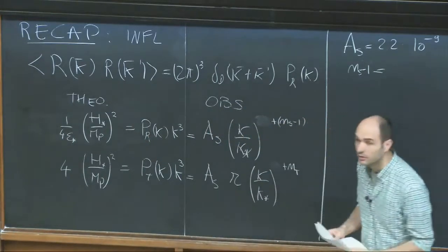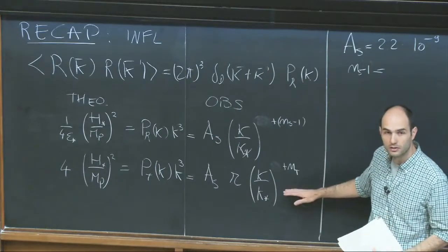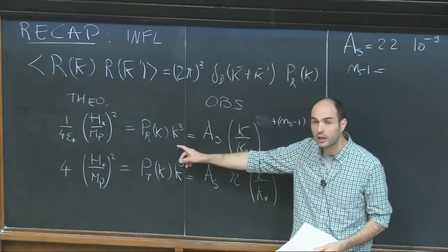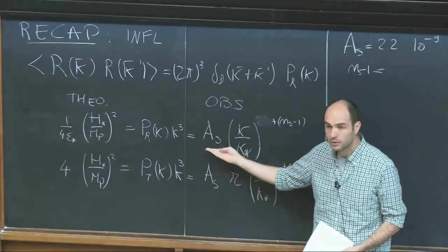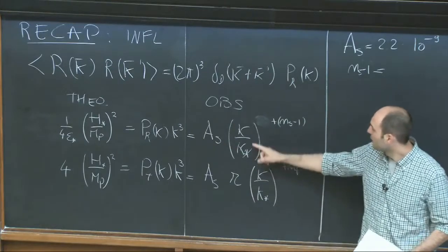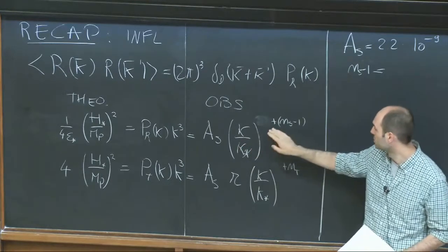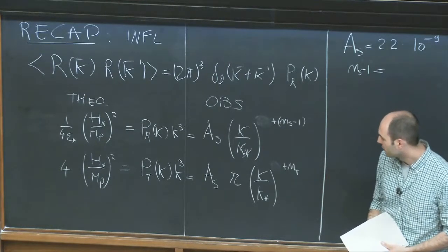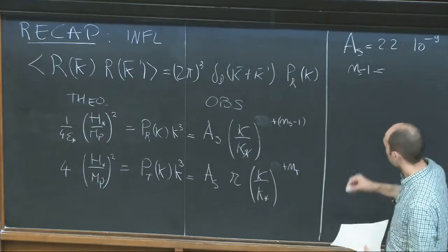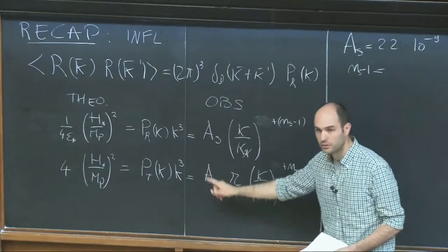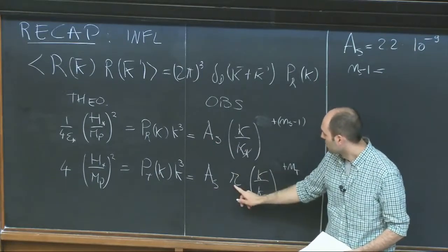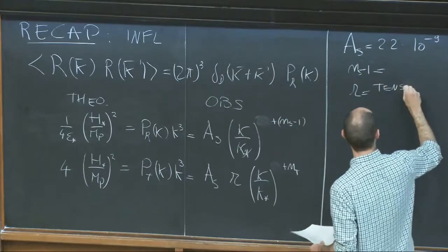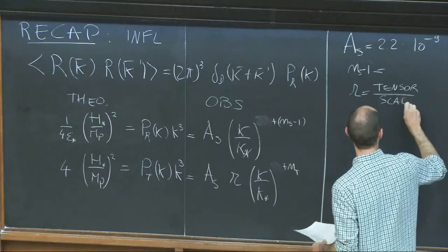On the observational side, what people have noticed is that the scalar spectrum behaves approximately like K-cubed, so a reasonable parametrization puts an amplitude A_S in front and allows for a small deviation from a perfect K-cubed, parametrized as n_S minus 1. Similarly for tensors, people define the tensor-to-scalar ratio R as the ratio of tensor amplitude to scalar amplitude.